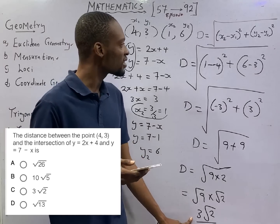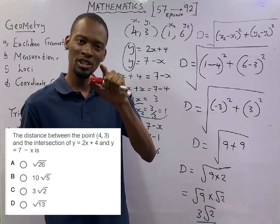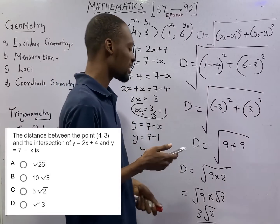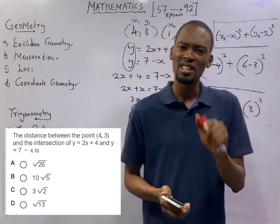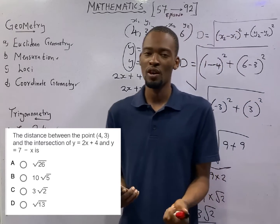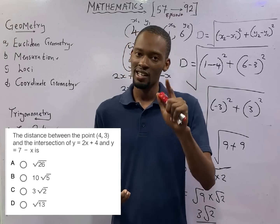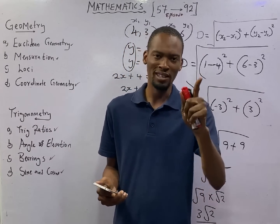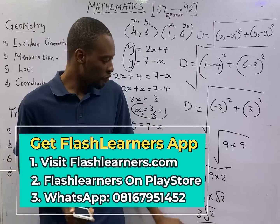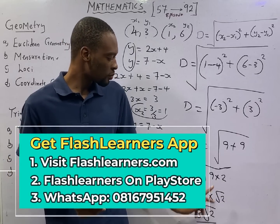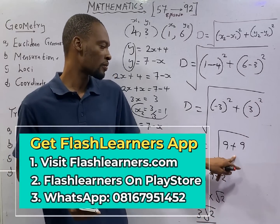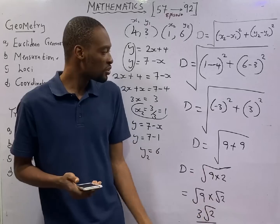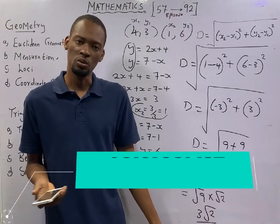If you don't understand this, the problem is not coordinate geometry. The problem will be that you did not pay attention in my surd class when I gave all the rules of surd and their applications. So run back now and watch that video if you have issue with getting 3√2 from square root of 18, but if you don't have any issue with the answer, you are good to go.